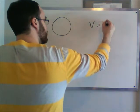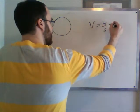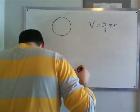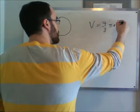The volume of the sphere is four-thirds pi r cubed.